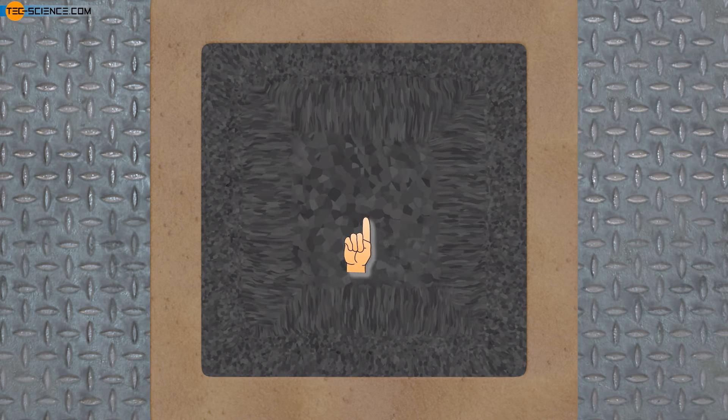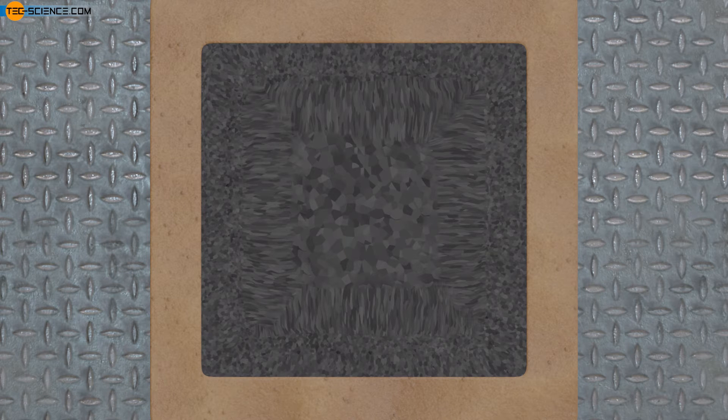Inside the cast ingot, a very coarse-grained microstructure is formed due to the relatively low but almost isotropic undercooling. Subsequent heat treatment can transform this heterogeneous primary structure into a homogeneous secondary microstructure with the desired properties.